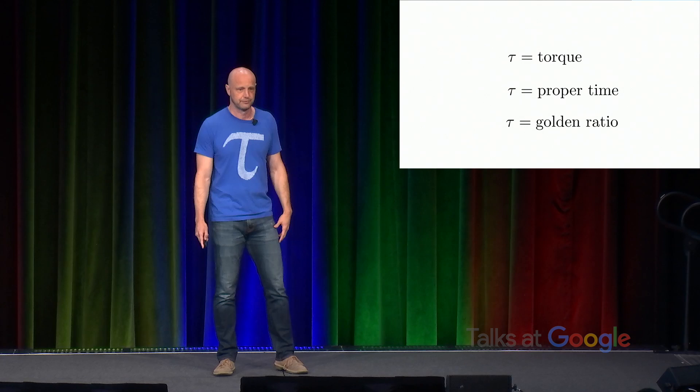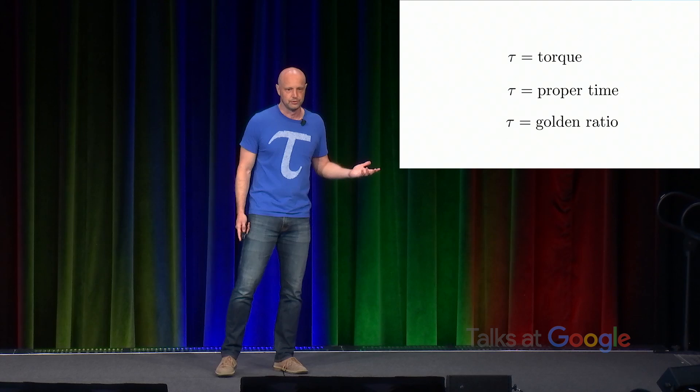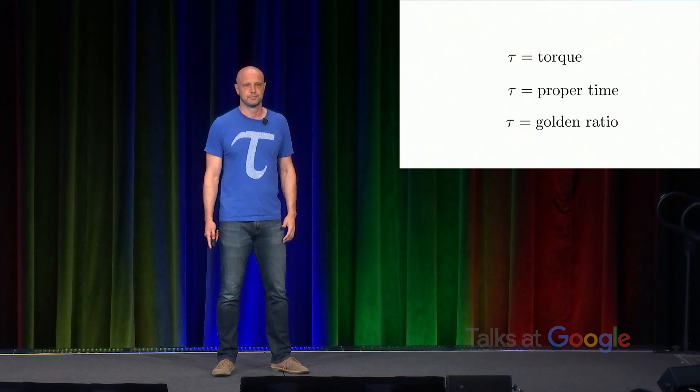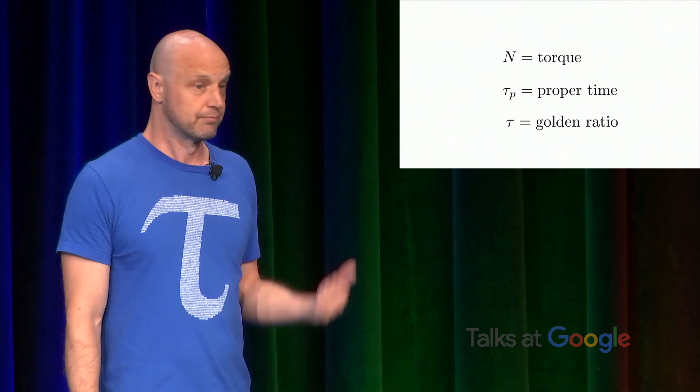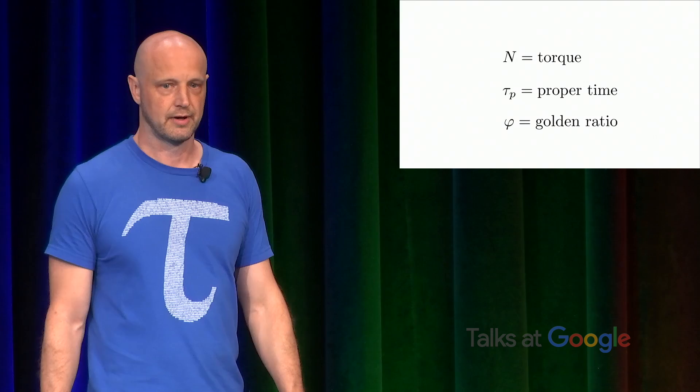So for example, one of my favorite textbooks, Introduction to Electrodynamics by David Griffiths uses N for torque, not to route around a conflict, just that's the letter he uses. For proper time, maybe you could throw on a subscript. The golden ratio has a standard alternate. It's probably even more common. You can use the letter phi. But it's also interesting to note that the use of Tau for the golden ratio shows that there is precedent for using this letter to represent a fundamental mathematical constant.